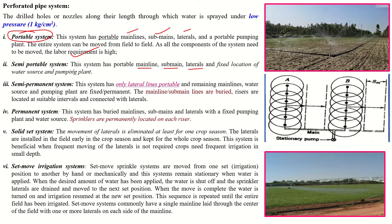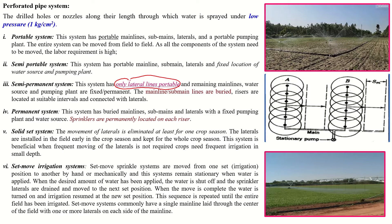In the semi-portable system, the main line, sub-main, and laterals are portable, but only the water source and pumping plant are at a fixed location. In the semi-permanent system, only the laterals are portable — the main line and sub-mains are buried under the ground. The risers are located at suitable intervals and connected with the laterals, which remain above the ground surface.